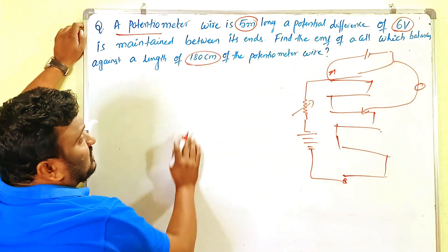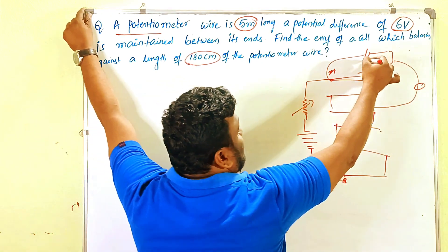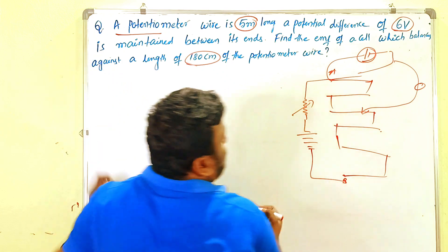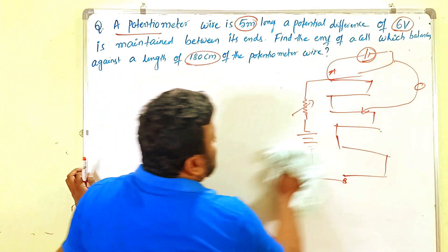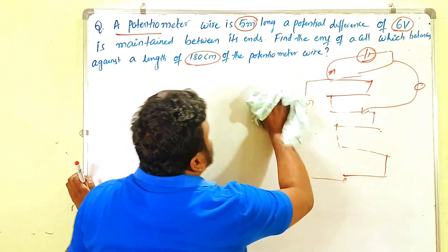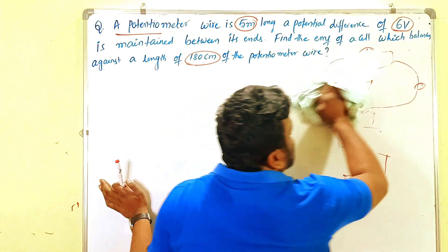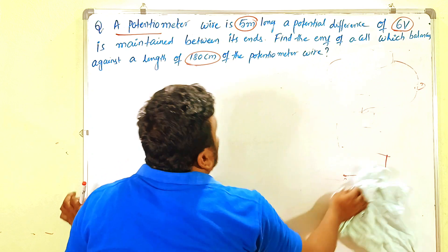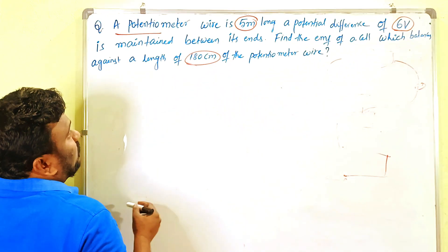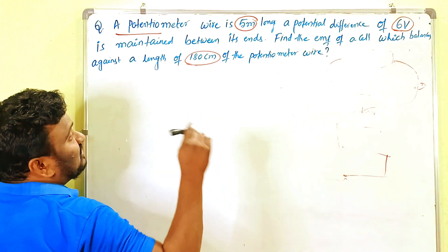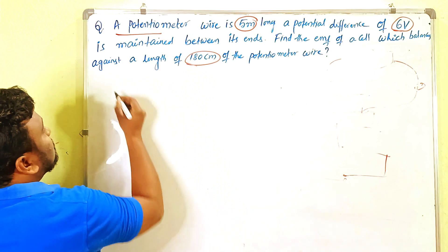When the potentiometer is balanced at a distance of 180 centimeters, we have to find out the EMF of the cell connected in the secondary circuit. Simply, there is one potentiometer wire of length five meters, six volts is applied between the ends, and the balancing length is 180 centimeters.